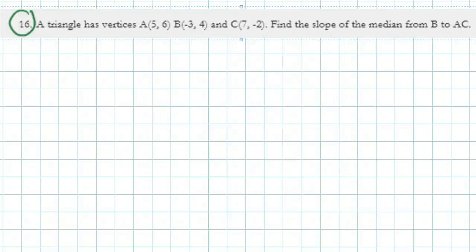Hello. In this video, we're going to work through question number 16 from Lesson 1, and it's the following. A triangle has vertices A which is 5, 6, B which is negative 3, 4, and C which is 7, negative 2.